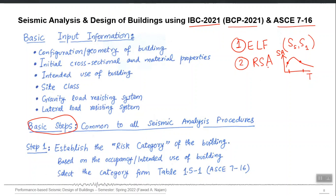Just like with ground response analysis, we again have two options: option one is the code equation, and option two is the site-specific PSHA. The code will guide us on when to go for site-specific analysis and when the code equation suffices. There are incentives for designers to pursue site-specific PSHA since it is more accurate, and if the resulting values are lower than the building code values, you are justified in using them to achieve economy in your structure. If you cannot undertake that detailed exercise, use the code equation.